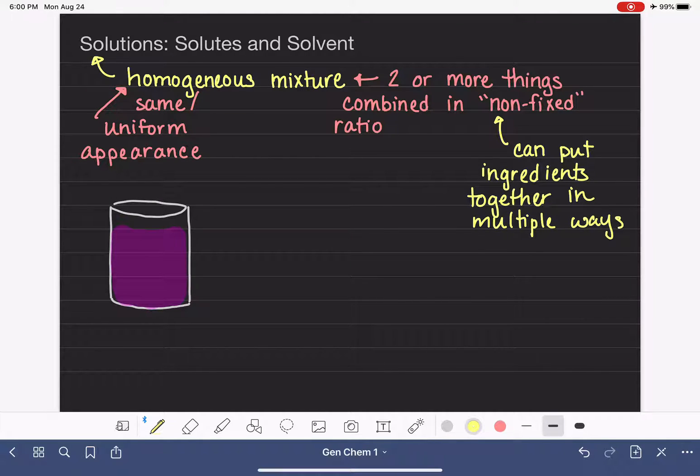If we go back to the Kool-Aid analogy, if you're making a pitcher of Kool-Aid, you need one packet of Kool-Aid, and you need some sugar. Let's say one cup of sugar. And then you also need some water. Maybe it's eight cups of water. These are the ingredients that we put together.